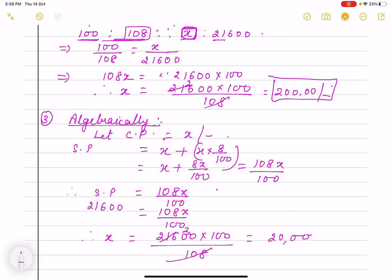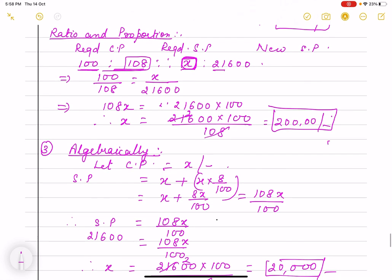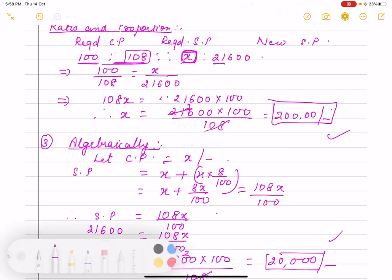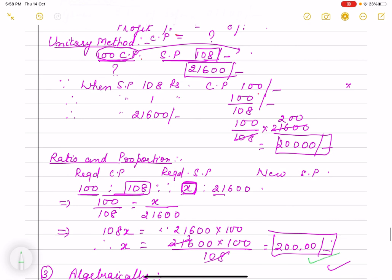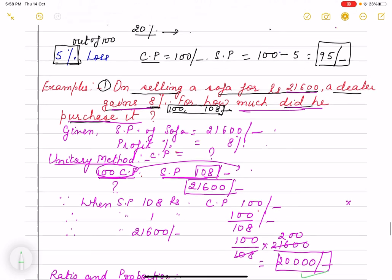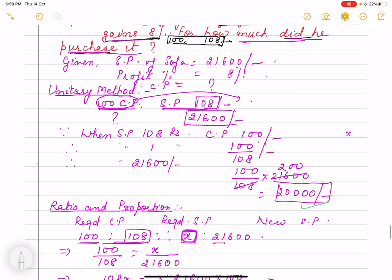So har ek case mein maine kya dekha ki hamara CP ek hi aa raha hai. Toh aap chahein unitary se karein ya suppose karke karein ki X hai, ya aap ratio proportion se karein ya unitary method se karein, kisi bhi case mein aapka answer same aa raha hai.